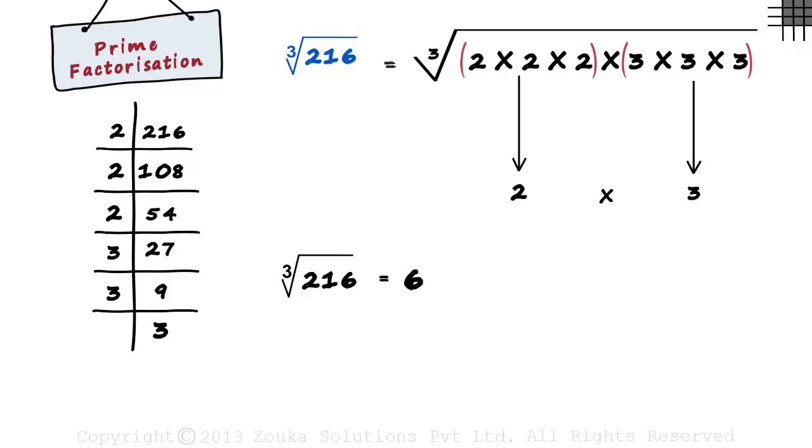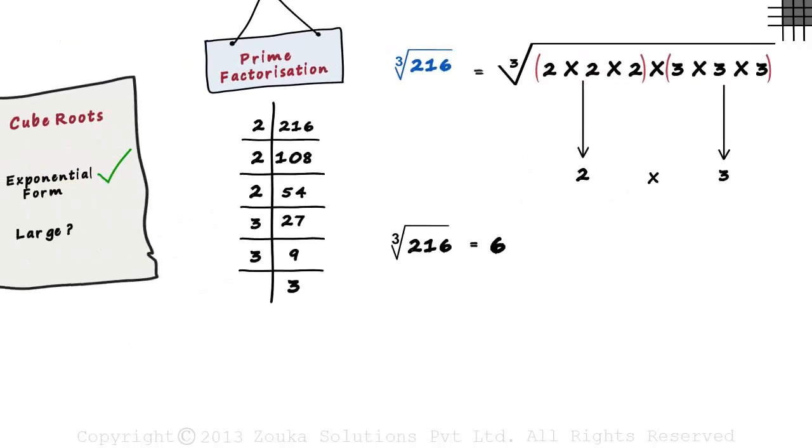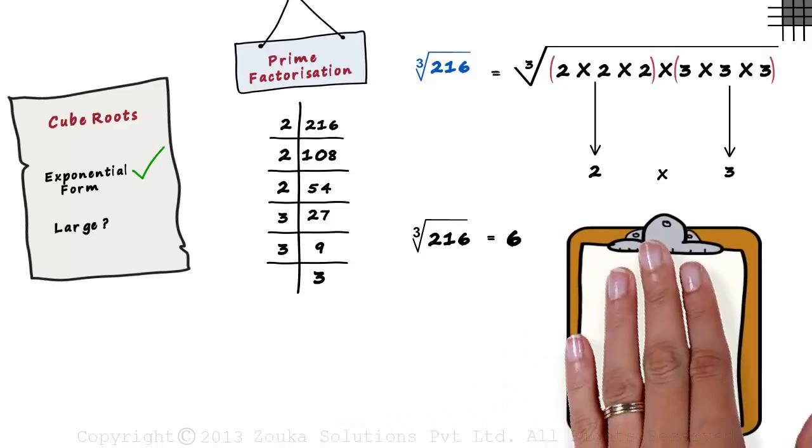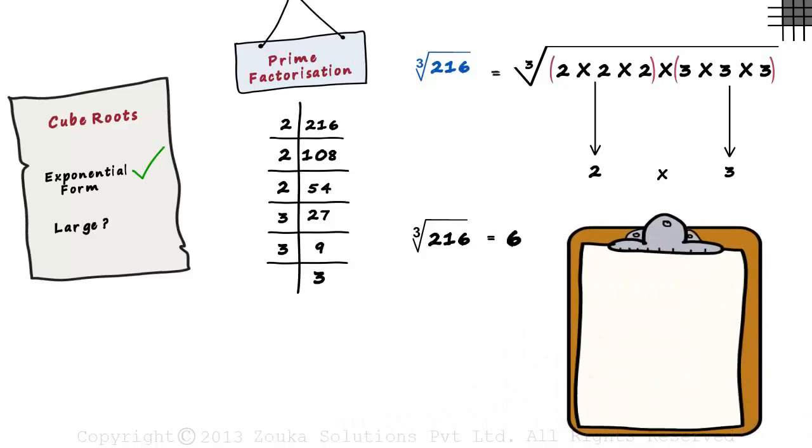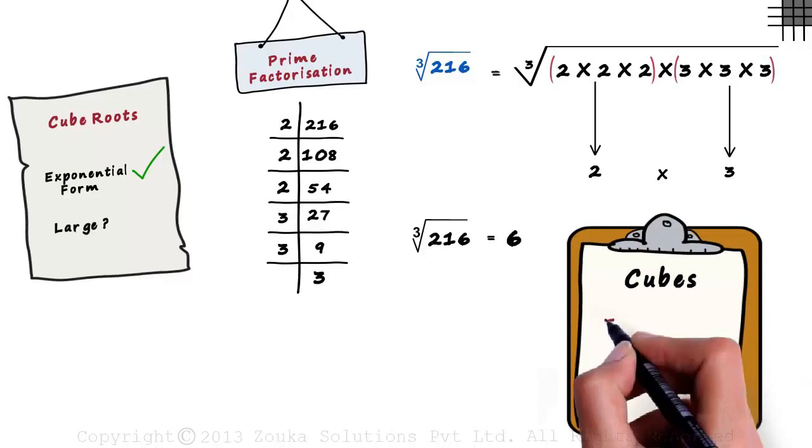So now we know that once we reduce the numbers to its prime factors, the task is very simple. We make groups of 3 and choose one number from each group and multiply them. And it's a good idea to memorize the cubes of numbers from 1 to 10.